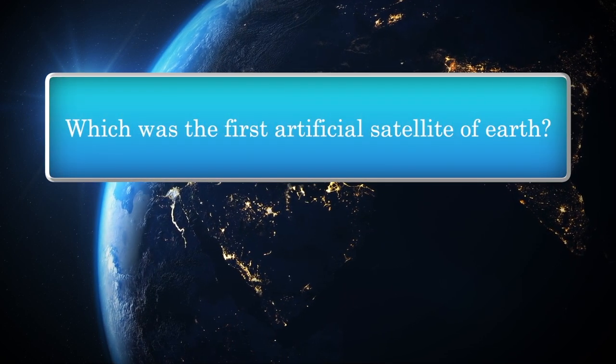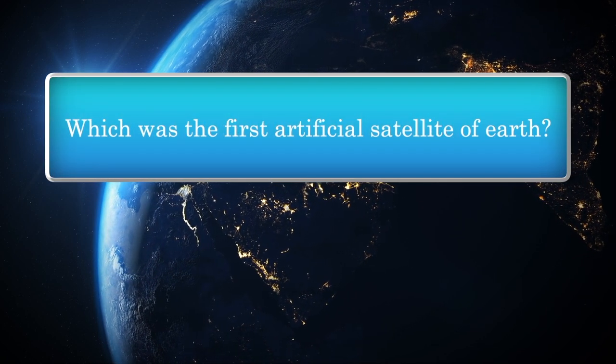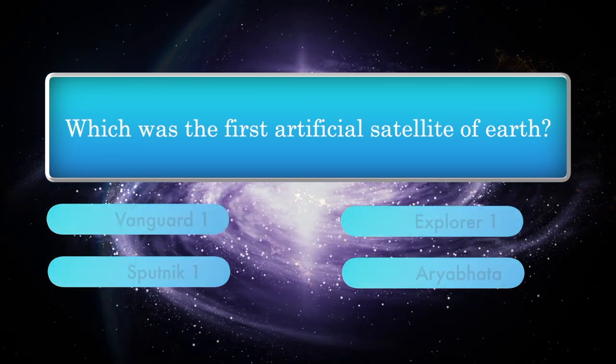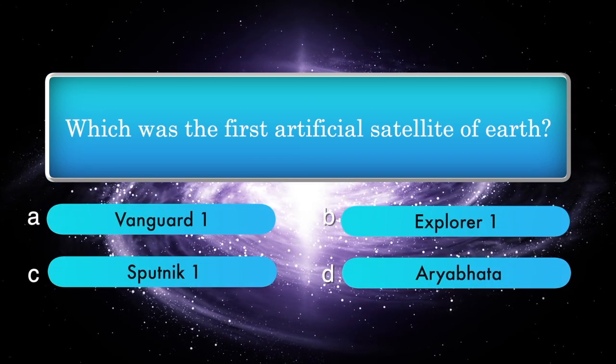Which was the first artificial satellite of Earth? Options: Vanguard 1, Explorer 1, Sputnik 1, Aryabhatta.